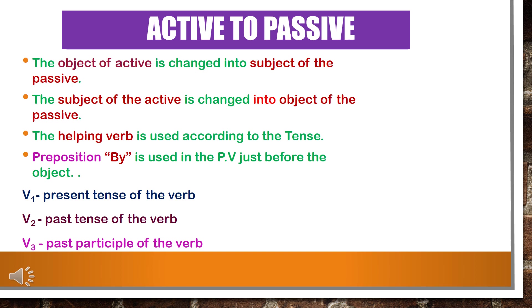The following are the main rules of active voice and passive voice. First basic rule: the object of active is changed into subject of the passive. The subject of the active is changed into object of the passive — that is, the subject and object of the active voice change places in the passive voice. Second rule: change the helping verb according to the tense. Third rule: preposition 'by' is used in the passive voice just before the object.